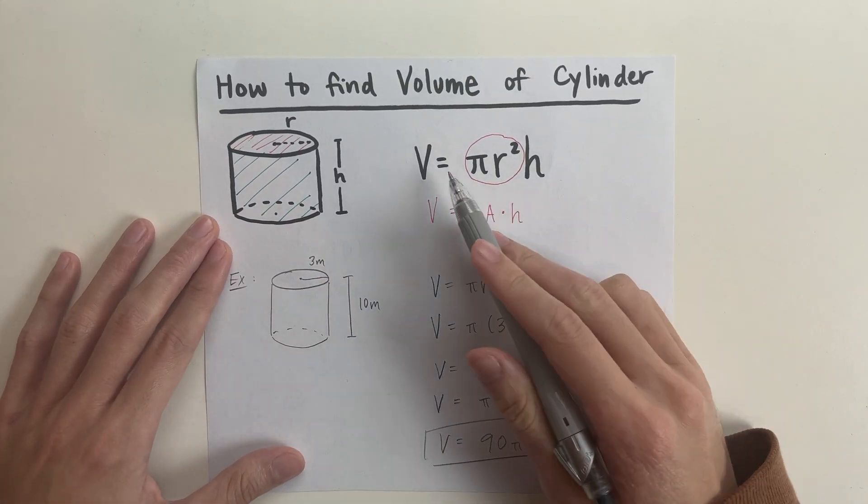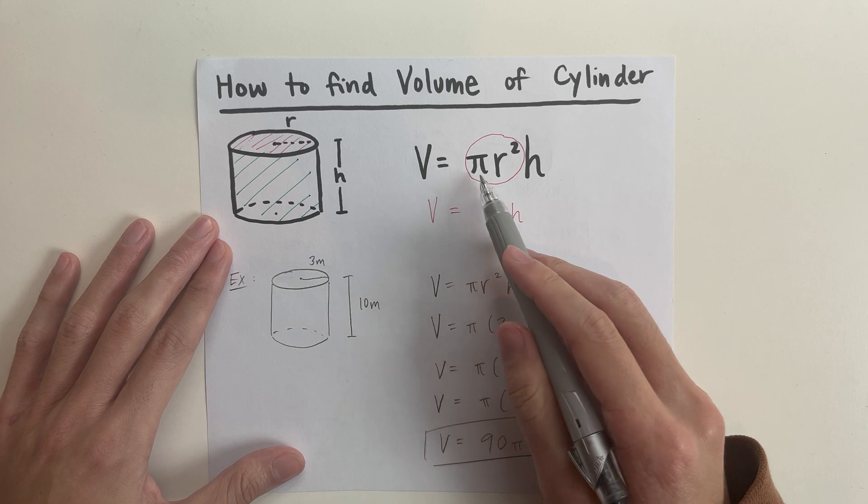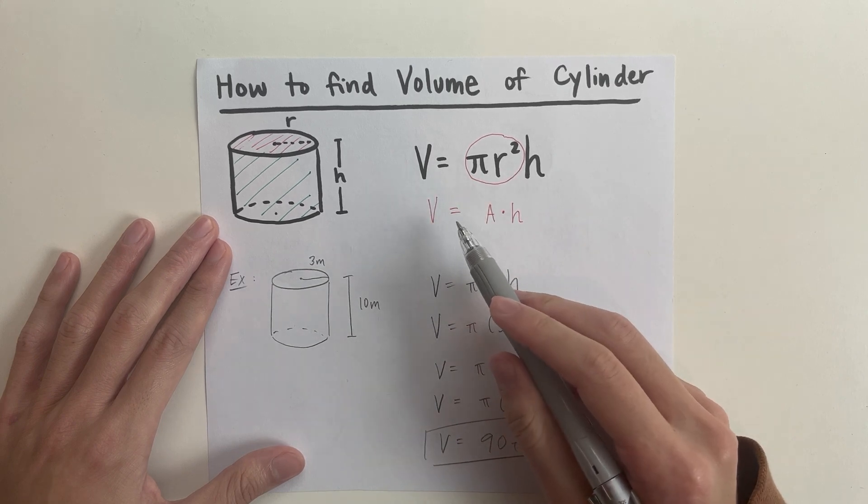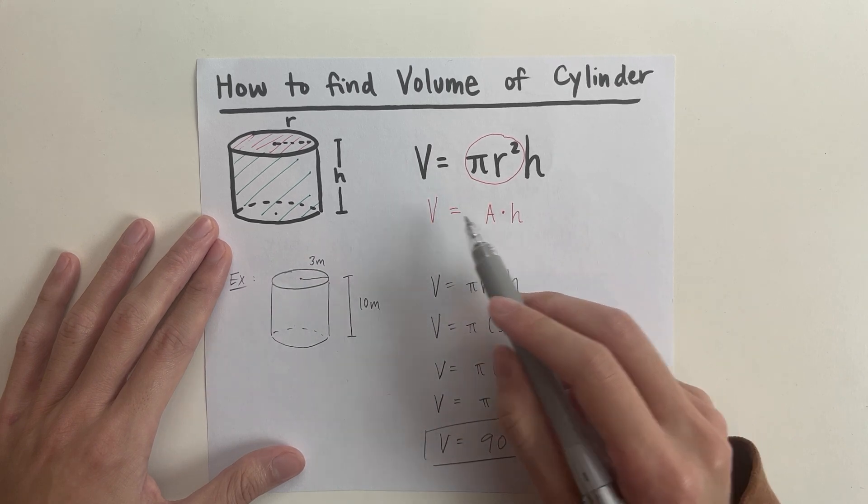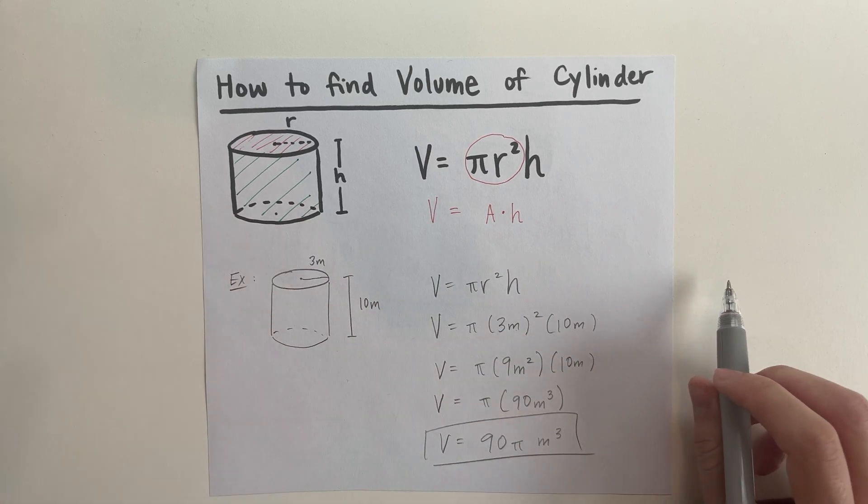Thank you, everyone. Just to make sure, the volume of a cylinder is pi r squared times height, also known as area times the height, or area of a circle times the height. Thank you.